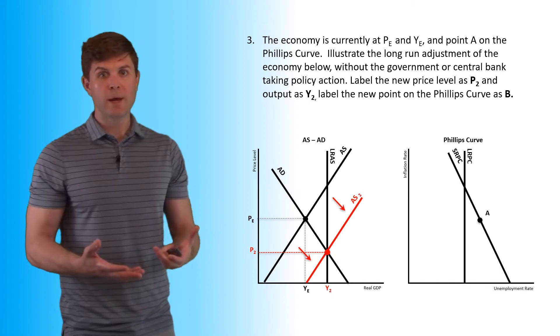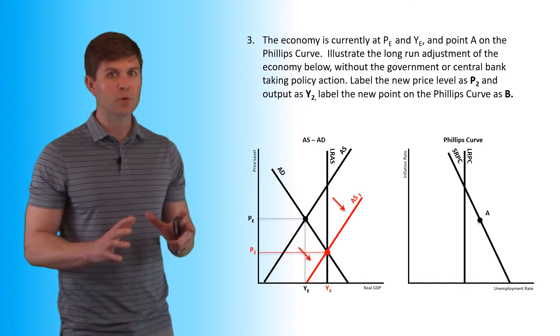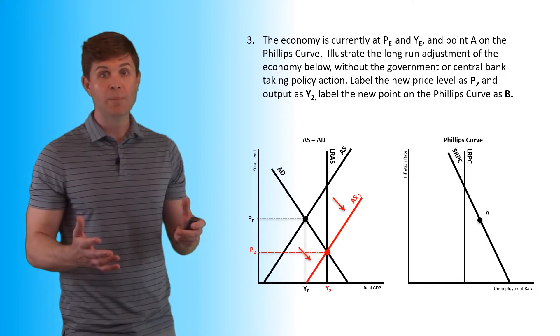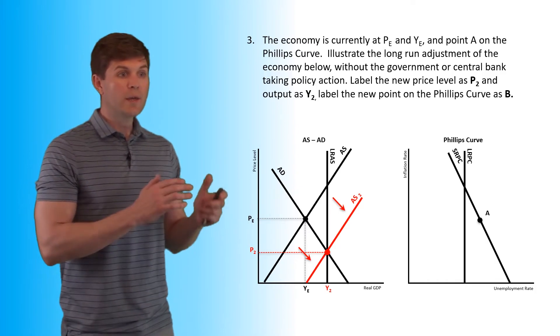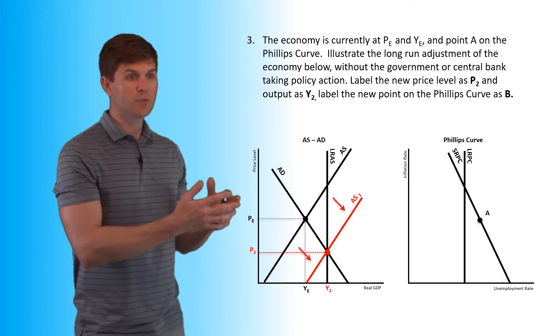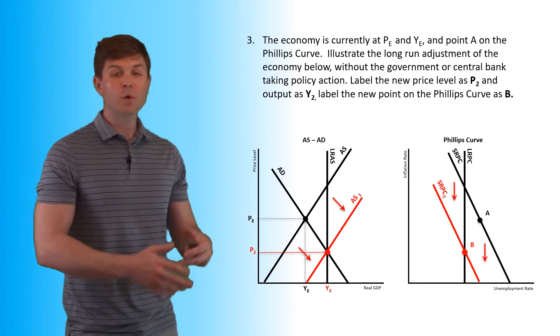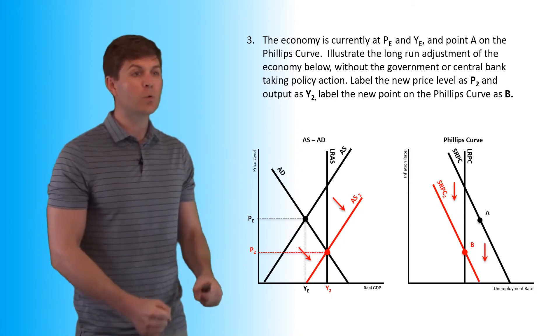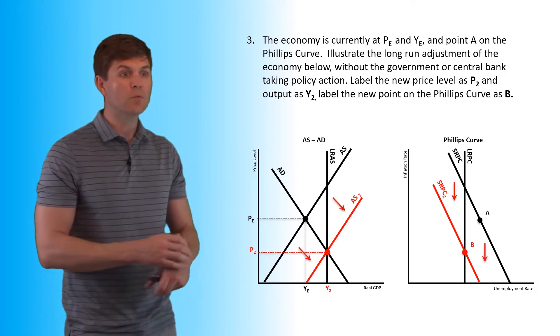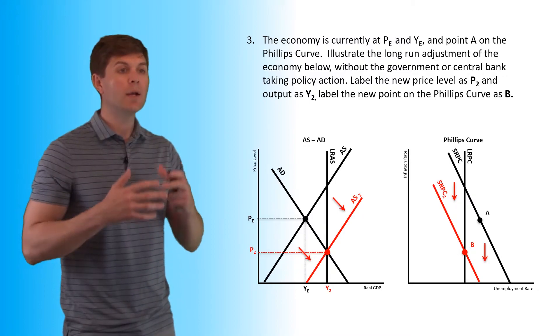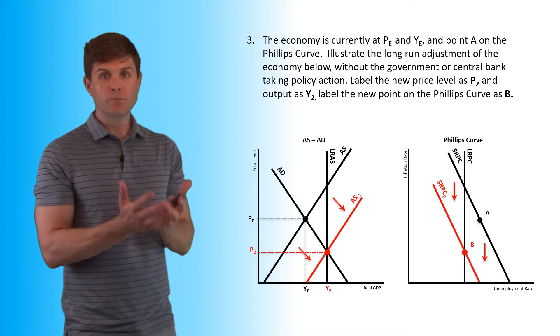How will the Phillips curve respond? Now you don't see too often the Phillips curve as part of the question when it comes to the long run adjustment, but it does happen from time to time. So if we see our aggregate supply curve shifting to the right, we know that our short run Phillips curve is going to have to shift as well. So we're going to see that downward-shifting short run Phillips curve and point B is our new equilibrium on there, and that gets us back to full employment.